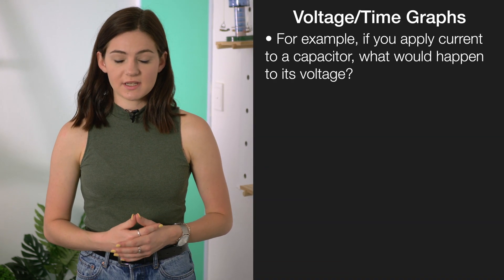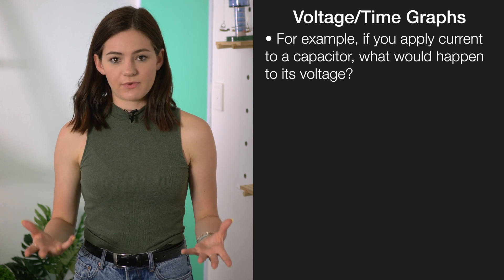We're going to talk you through a couple of classic questions electricity will throw at you. A classic question you'll get asked is explaining either the voltage or current over time graph for capacitors or inductors. For example, if we were to turn on current for a capacitor, what would happen to its voltage?